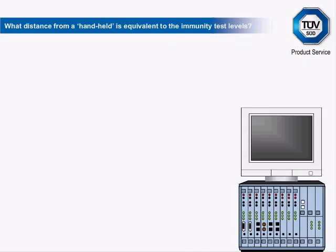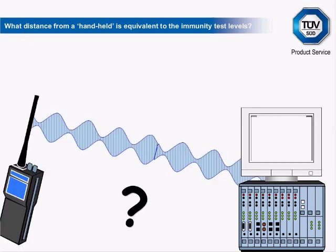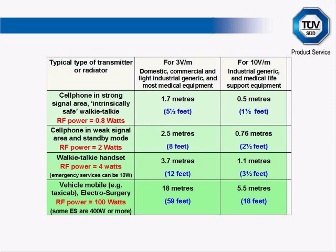To calculate the immunity requirement for a piece of equipment or how we can ensure that equipment will work at a given distance from an intentional radiator, we need to know how strong a field a typical intentional radiator will transmit. For example, a walkie-talkie handset with an RF power of 4 watts will generate a 3 volt per metre field at 3.7 metres distance, and a 10 volt per metre field at 1.1 metres distance. These figures assume free space — once constructive reflections are added, the distances for those field strengths will decrease.